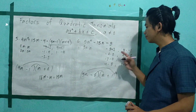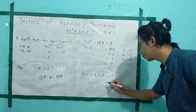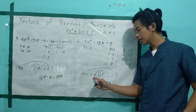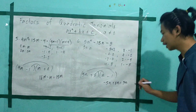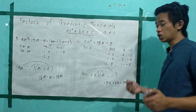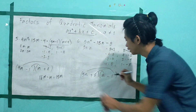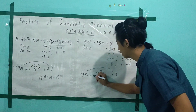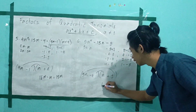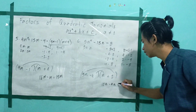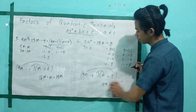Try (5m + 8)(m − 1): 5m times negative 1 gives negative 5m, and positive 8 times m gives 8m. Sum is negative 5m plus 8m, which equals positive 3m — not the same. Try (5m − 4)(m + 2): 5m times 2 gives 10m, and negative 4 times m gives negative 4m. Sum is 10m minus 4m, which equals 6m — not the same.